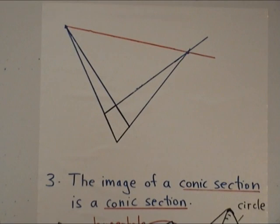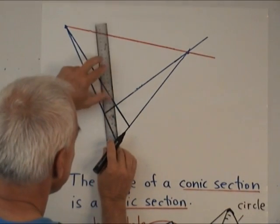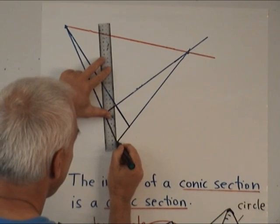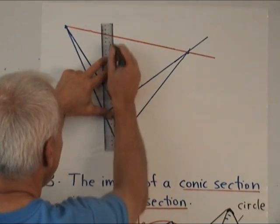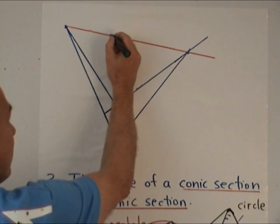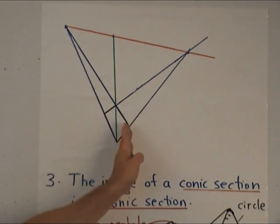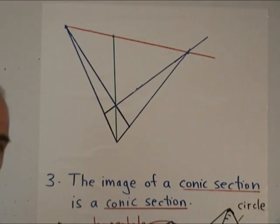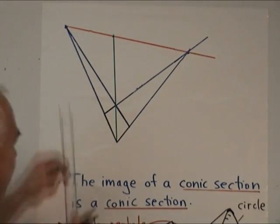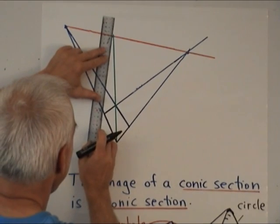And now we need to use that other observation that the diagonals also meet at the horizon. So let's draw a diagonal of our original square. There's a diagonal giving a third point on the horizon. Now all the diagonals are going to have to be concurrent at that point on the horizon. So we can draw some more diagonals.